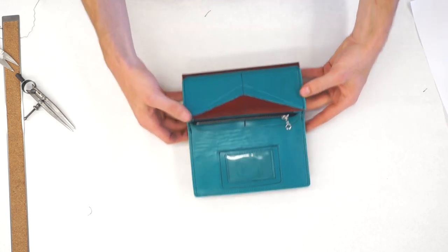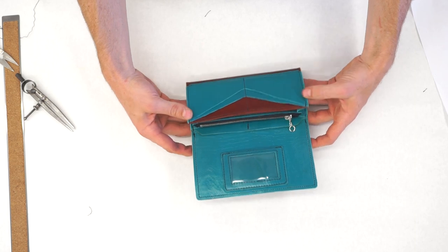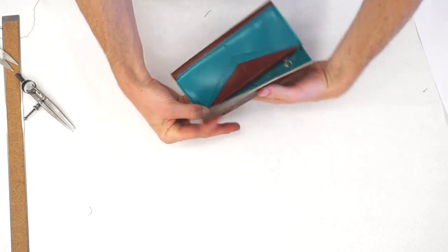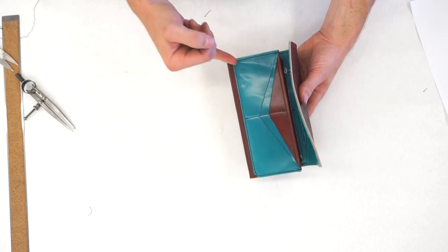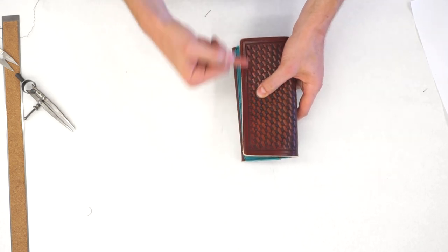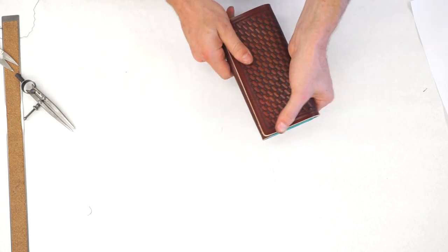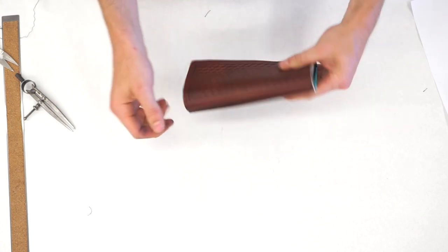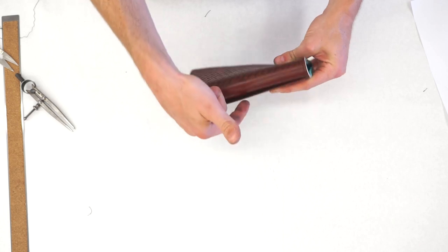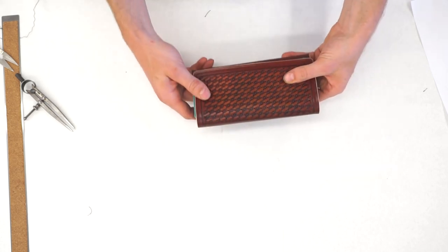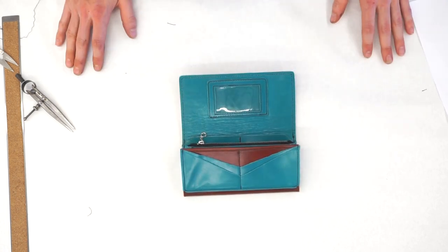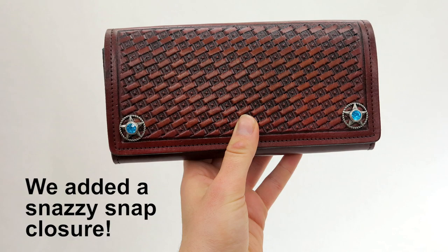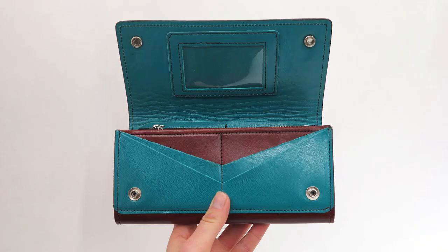Besides that, you can figure out whatever style of closure you'd like to use. We've done snaps in the corners going through just this front pocket here and here, snapping down here and here. And we've done strap closures coming from the back pocket all the way around to the front. Pretty much any style you like. Turns out to be a happy little clutch.